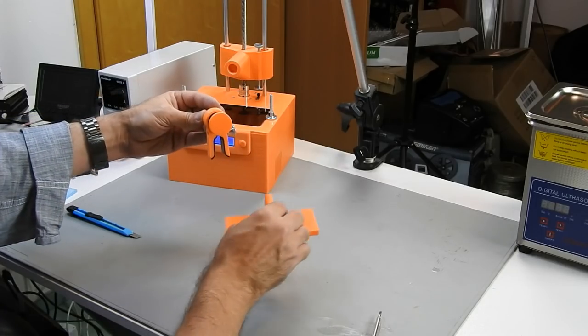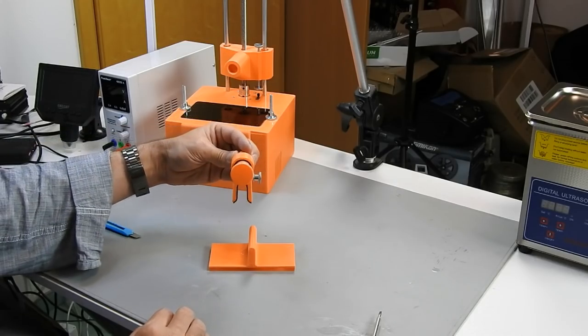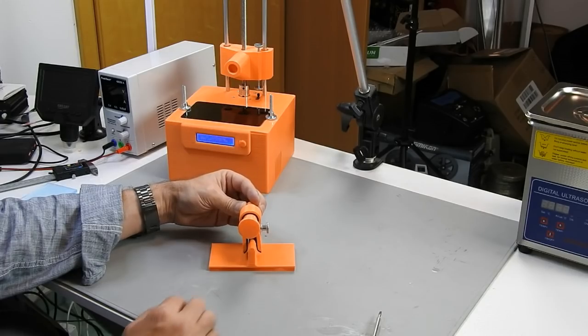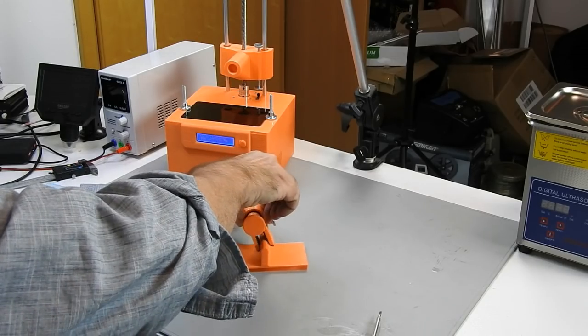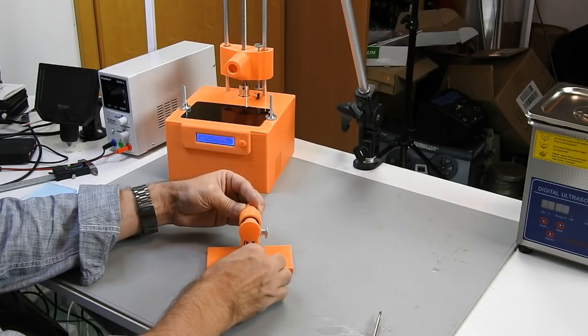In this open position the clamp allows us four degrees of freedom. We can tilt along the X axis, move back and forth along the Y axis, we can also tilt along the Y axis, and also adjust the height along the Z axis.